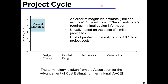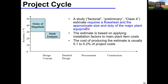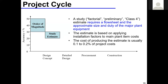At the very early stage you have an order-of-magnitude estimate, done based on previous experience, cost of similar processes, or very basic heuristics — for example, for every major piece of equipment account for a million dollars. Then you have a study estimate, also called a Class 4 or factorial preliminary estimate. At this stage you need your flowsheet and an approximate size and duty of major equipment. To get the flowsheet and approximate size and duty, you need a basic Aspen simulation.